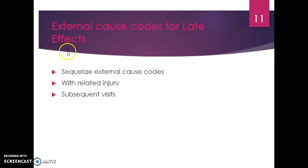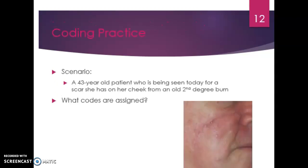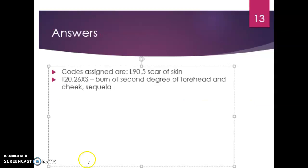External cause codes for late effects — also called residual effects or sequela — remain after an acute phase of an injury has healed. When coding these, you assign the S for the seventh character. A sequela is never to be used with a current injury. Use a late effect external cause code for subsequent visits when a late effect of the initial injury is being treated, but do not use a late effect external cause code for a subsequent follow-up visit when no late effect has been documented. Example codes include L90.5 for scar of skin and T20.26XS for a second-degree burn sequela.